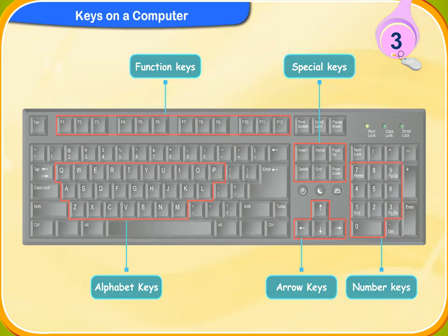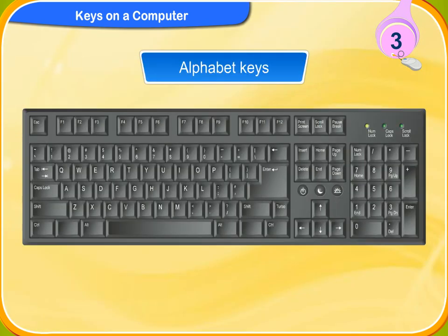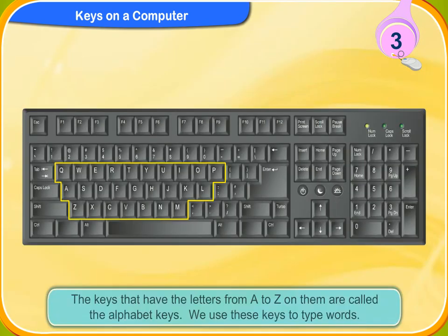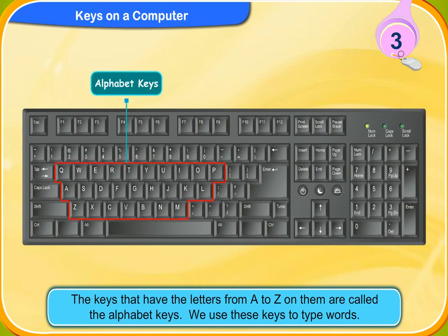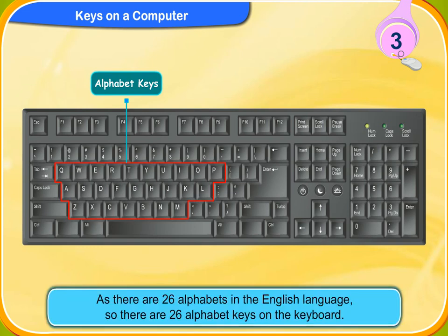Then tell me what the alphabet keys are. The keys that have letters from A to Z on them are called the alphabet keys. We use these keys to type words. As there are 26 alphabets in the English language, so there are 26 alphabet keys on the keyboard.